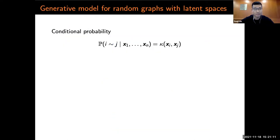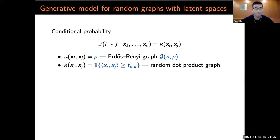Note that the latent space graph defined by this conditional probability is actually very broad and includes a lot of models studied before. So when kappa is a constant p, this is the well-known Erdős-Rényi graph G(n,p). When kappa is a threshold function over the inner product of the vectors, this is referred to as the random dot product graph.